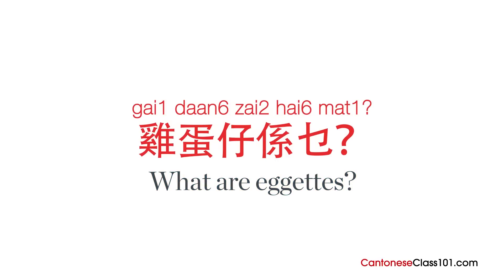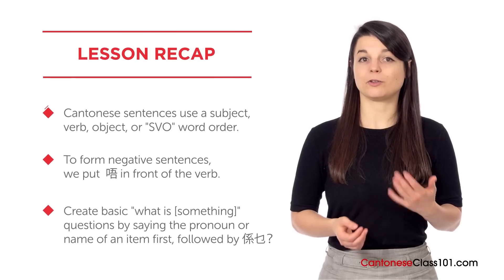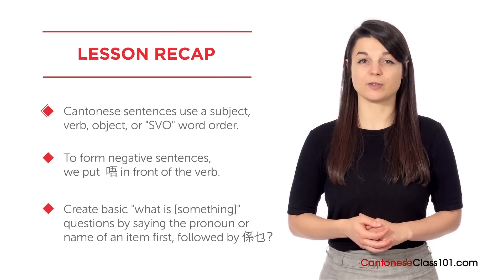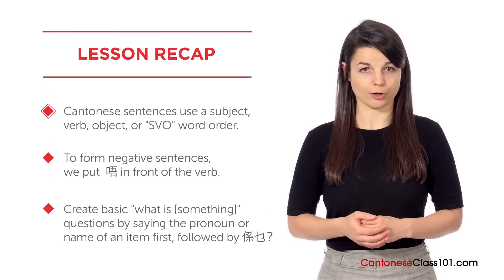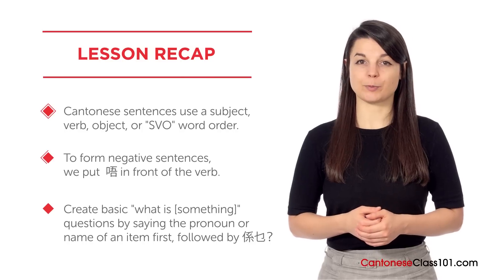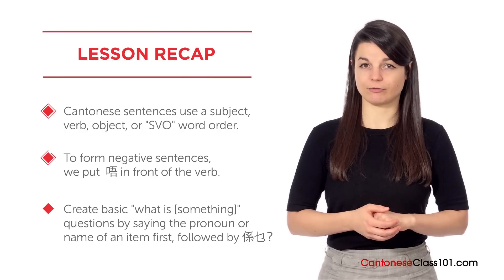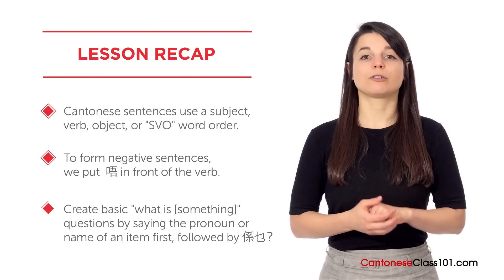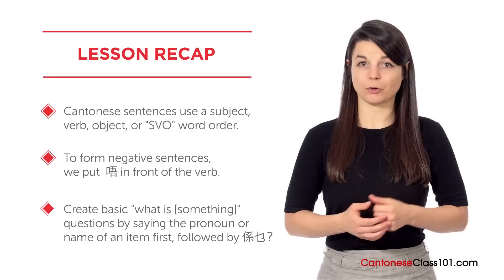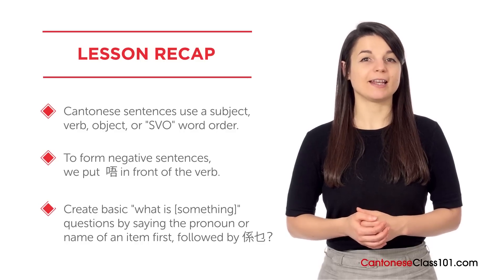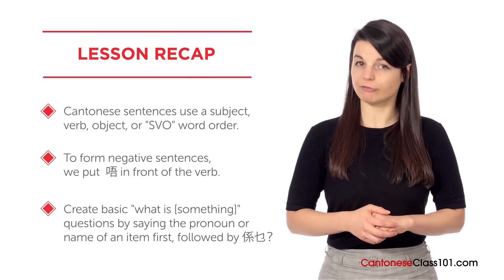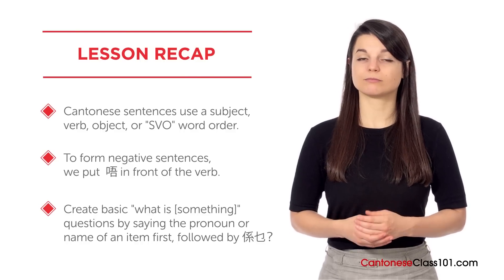Now you try to form a question and leave it in the comment section for us to read. In this lesson, you learned that Cantonese sentences are formed using subject-verb-object, or SVO, word order. To form negative sentences, we put the negation character in front of the verb. And lastly, you can create basic 'what is something' questions by saying the pronoun or name of an item first, followed by 係咩?